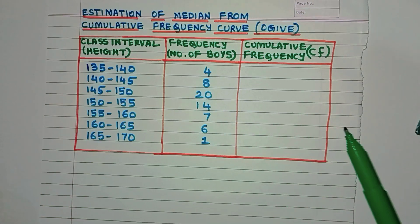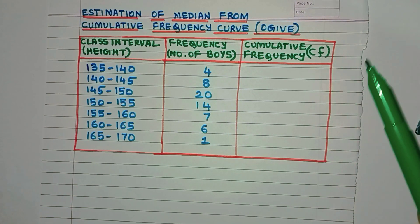Now to calculate the median, we need an extra column which is known as the CF or the cumulative frequency.